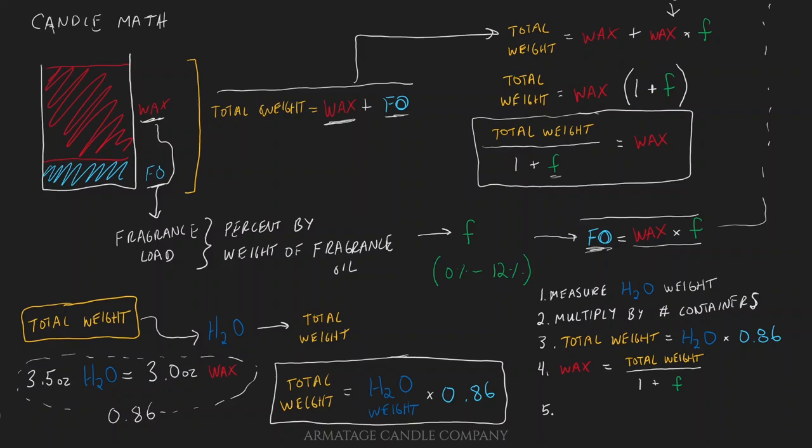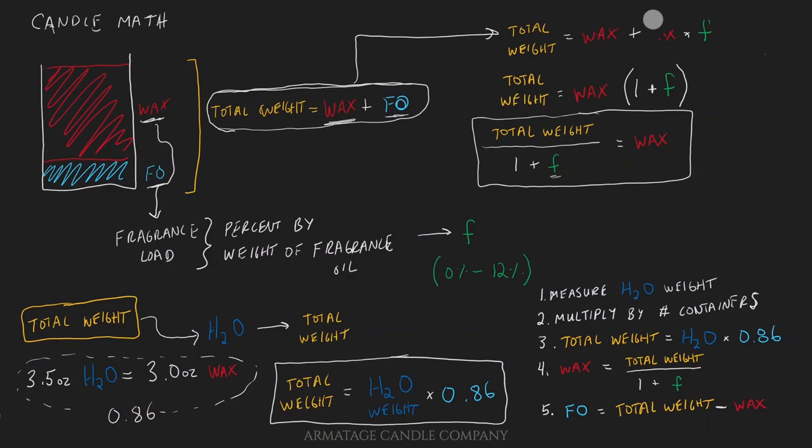And the final step is to take this equation up here, this idea that whatever isn't wax inside our candle is fragrance oil. And we'll say that our fragrance oil should equal the total weight of the candle minus the wax weight. Right, we could also multiply it, we could use this equation here and try to figure out how much it should be, and that wouldn't be wrong, but it's easy to introduce some errors especially in smaller batch sizes. So let's do an example now, right? Let me clear out some space here, we'll leave our five steps for what we need down there.